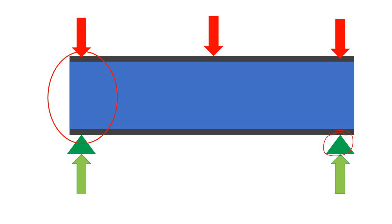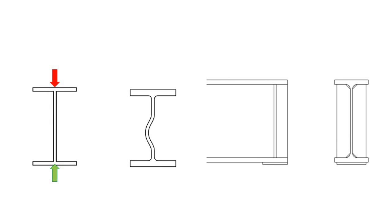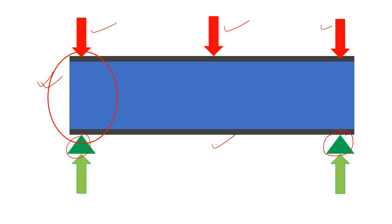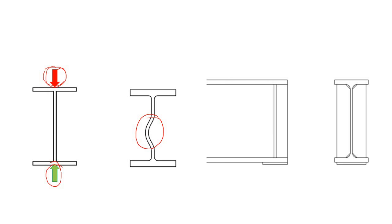Here is another example of global and local stability. Consider a simply supported beam with two supports and external loads, and the beam is sufficiently strong enough to carry all those external loads. But if you consider the web in the marked zone, the web is subjected to a compressive load, and if the web is not strong enough it will buckle. In that case, the overall beam is globally stable but the web is not stable locally.